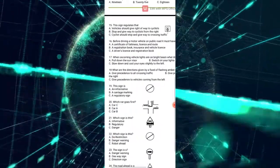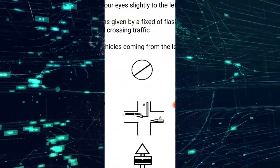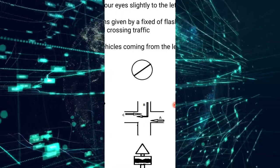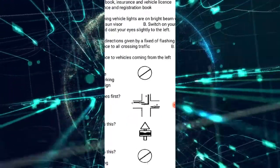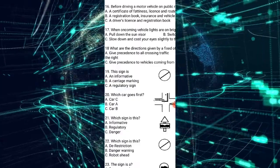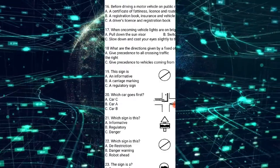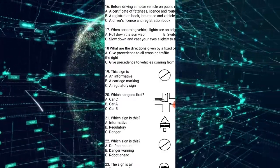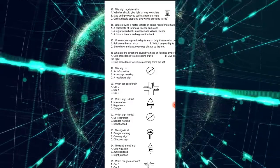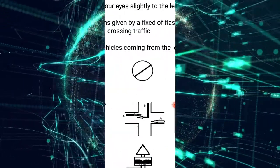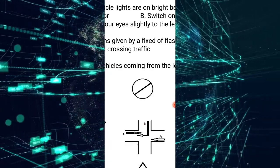Number 19: this sign is a de-restriction sign. It cancels out the previously imposed speed limits. Take note: this is the only informative sign that is not a right angle or triangle shape — it is a circle. This sign informs you that the speed limit that was previously imposed has been cancelled. It is an informative sign.